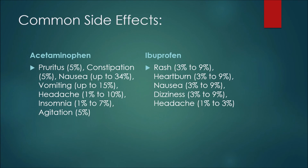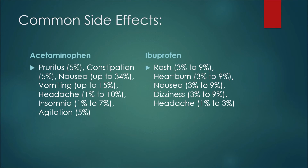For common side effects with acetaminophen: pruritus or itchiness may occur in 5% of patients, constipation in 5%, nausea up to 34%, and vomiting up to 15% of the time. 1-10% of patients may experience a headache, insomnia may happen 1-7% of the time, and agitation may occur in 5% of patients.